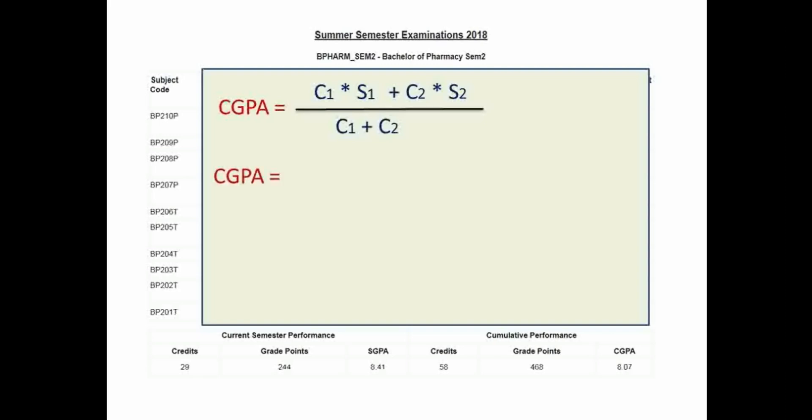Let's place the values over here. C1 into S1, that is 29 multiplied by 7.72. C2 is again 29, that is credit points of semester 2, and SGPA of semester 2 is 8.41, divided by C1 plus C2, that is 29 plus 29.